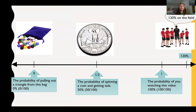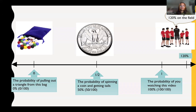We can look at probability from a scale from 0 to 1, or from 0 to 100%. When we're talking about a 0 probability, that means that that event will not occur. For example, what is the probability of pulling out a triangle from this bag? As you can see, there are no triangles in that bag, so the probability of pulling out a triangle would be 0.